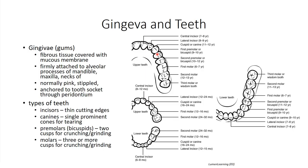Posterior to the cuspids are two premolar and two molar teeth, which crush and grind ingested morsels of food into malleable portions that can be swallowed. In late adolescence, a third molar or wisdom tooth will erupt. Because of the limited space in the upper and lower jaws, these teeth have a tendency to become impacted and are often surgically removed to avoid complications.